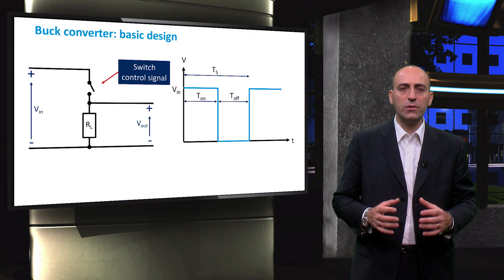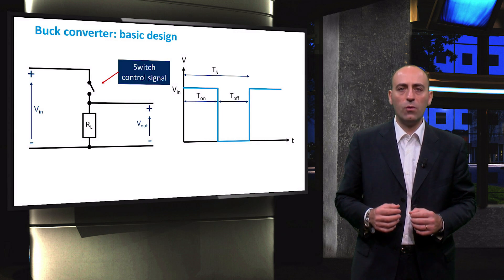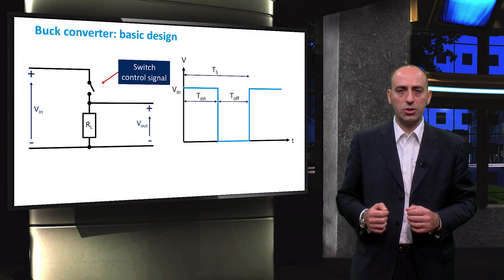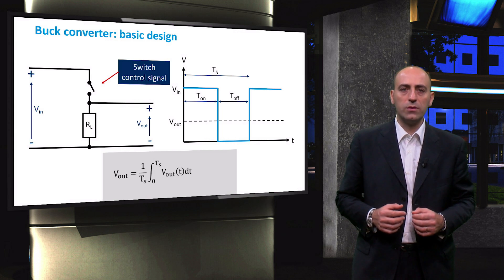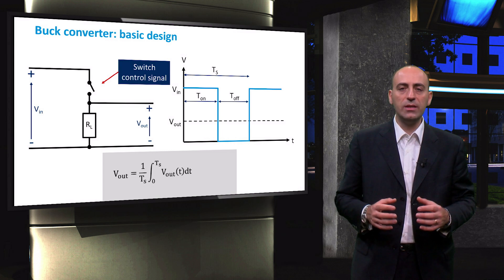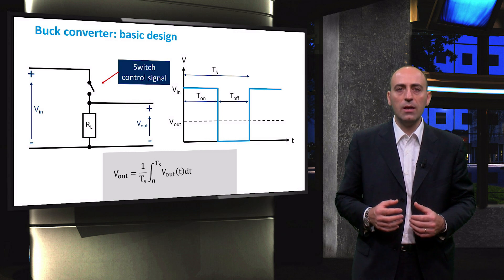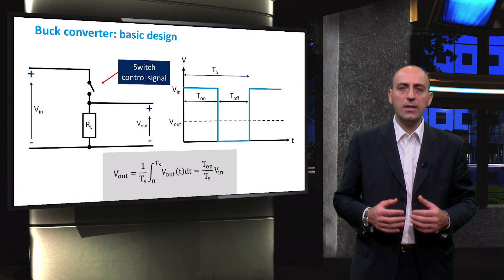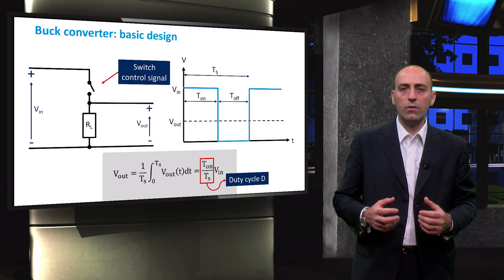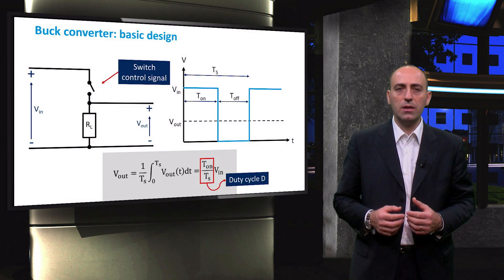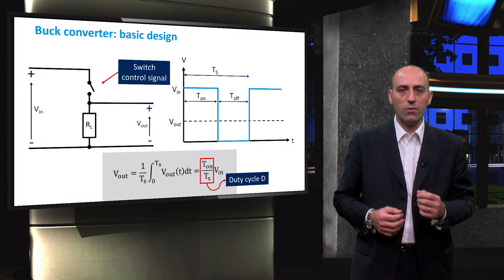This is the unfiltered output voltage waveform Vout of such a converter. If we calculate the average output voltage by integrating in time the voltage over one period of the signal, then the resulting average DC output is a fraction of Vin, where T_on over T_s is, by definition, the duty cycle that we already introduced.